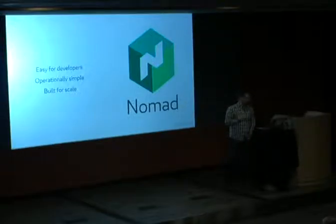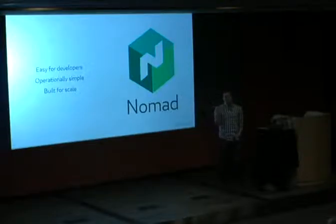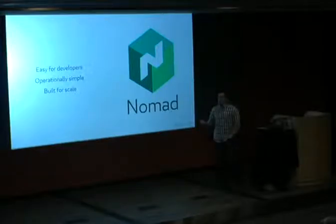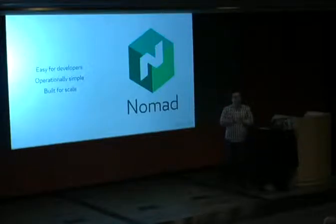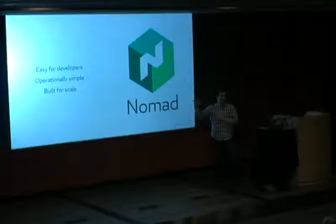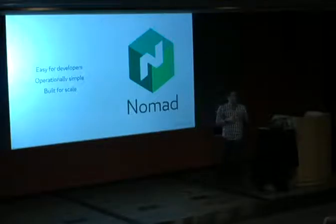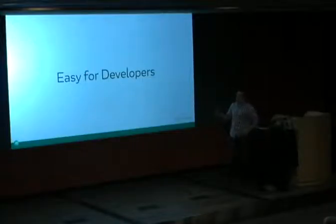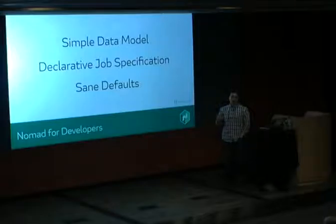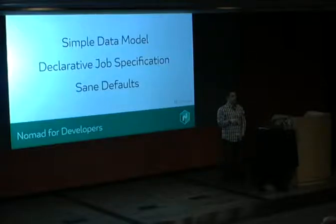When we built Nomad, we had three goals: easy for developers, operationally simple, and working at very large scale. We looked at other schedulers and felt we could do much better in these three categories. Adopting the existing ones was difficult — even for us, which usually isn't a good sign since we do ops all the time.